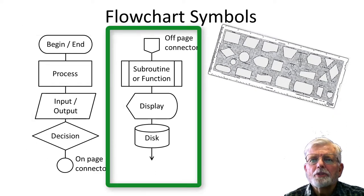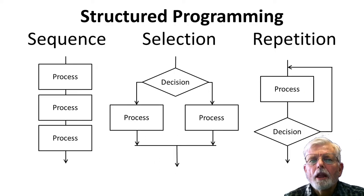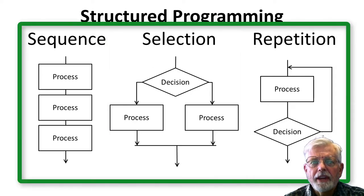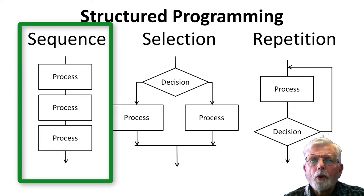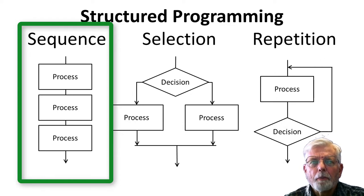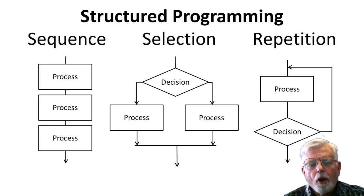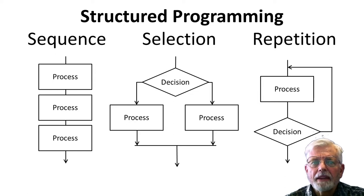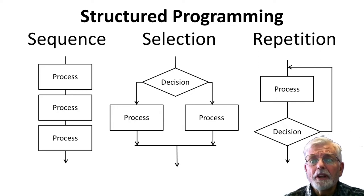The concept of structured programs states that all programs can be created with only three constructs: sequence, selection, and repetition, or a combination of any of them. Sequence is the easiest to understand — program steps are executed sequentially, one after another. Many times the order in which steps are executed is very important. For example, if I were baking a cake, it may not matter whether I put the egg in the bowl before the flour. However, it would make a lot of difference if I put the cake batter in a 9x13 baking dish, placed it in the oven for an hour and 30 minutes, took it out, and then turned the oven on to 350 degrees. Yuck!